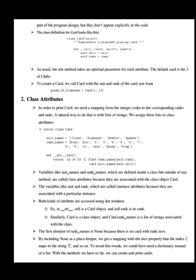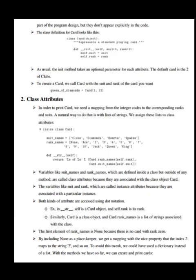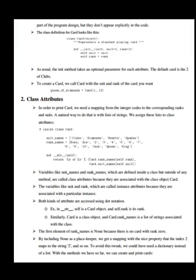The class definition for Card looks like this. As usual, the init method takes an optional parameter for each attribute. The default card is the two of clubs. To create a card, we call Card with the suit and rank of the card you want.